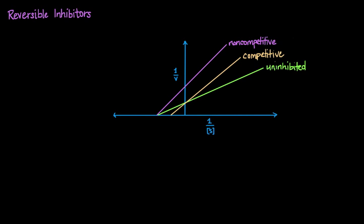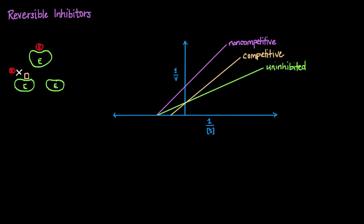Let's talk about what exactly an inhibitor is. Say we have an enzyme — I'll draw a little enzyme protein and label it E — with the active site in this groove here. The substrate, drawn in red and labeled S, binds there. An inhibitor is a molecule that either decreases the rate at which the enzymatic reaction occurs or stops enzyme activity completely. If it prevents substrate binding by physically blocking the active site or by binding at a separate allosteric site, it's called a competitive inhibitor.